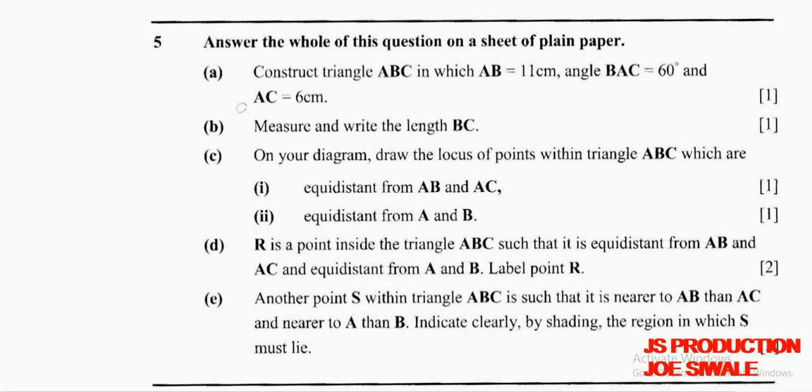Question A reads: answer the whole of this question on a sheet of plain paper. Construct triangle ABC in which AB is equal to 11cm, angle BAC is equal to 60 degrees, and AC is equal to 6cm. One mark.